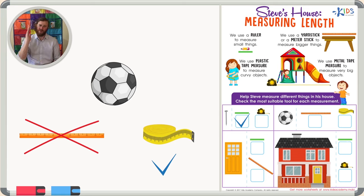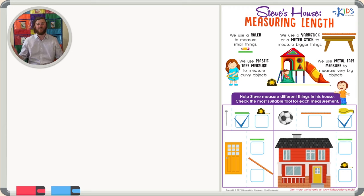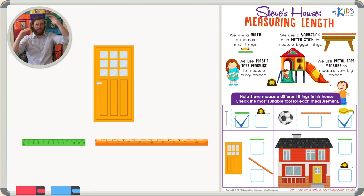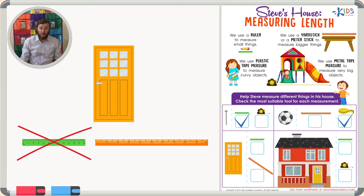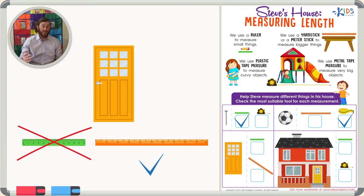The next object we want to choose the correct tool for is a door. This door is pretty big, so I don't think a ruler is going to be enough — we'd have to use multiple rulers. But if we had one meter stick we might be able to measure this door; we might need two, but it's still more appropriate than using a ruler. So let's choose the meter stick.